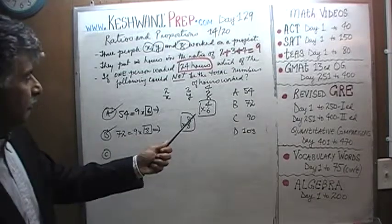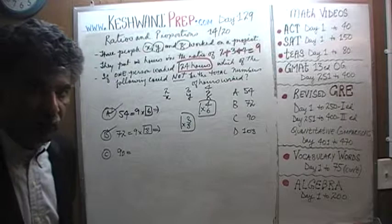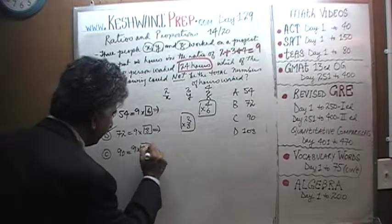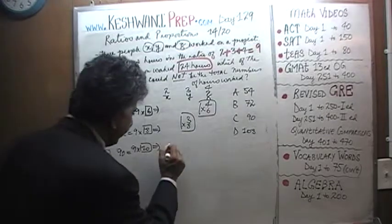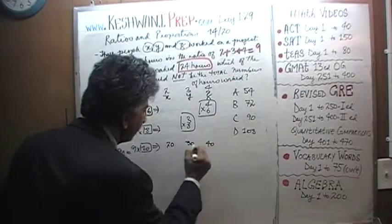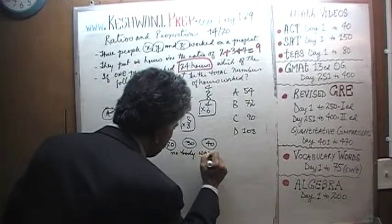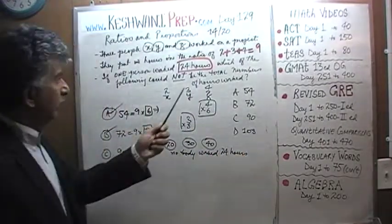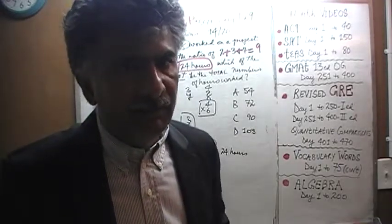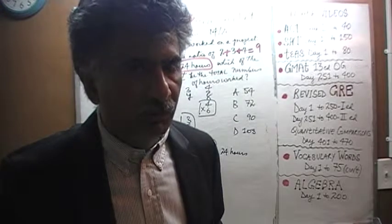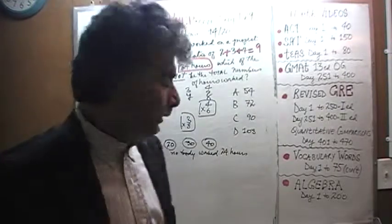Answer choice C says, well, you get the idea now. 90 tells us that in order for total number of parts to be 9, each part is worth 10 hours. Because 9 times 10 is 90. That implies that given the fact that they worked in a ratio of 2 to 3 to 4, if each part is worth 10 hours, that implies that X must have worked 20 hours, Y must have worked 30 hours, and Z must have worked 40 hours. As we can clearly see, nobody worked 24 hours. But we are told that one person did work 24 hours. This cannot possibly be the total number of hours worked by the three people.